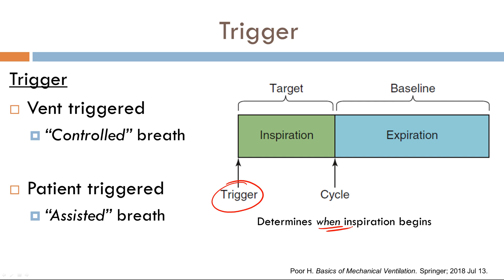So now let's get familiar with controlled breaths and assisted breaths. The difference between controlled breaths and assisted breaths is the trigger variable. If you have a controlled breath, or a ventilator-triggered breath, the trigger variable is time. For example, let's say you have a respiratory rate of 12 breaths per minute. If the patient is deeply sedated, 5 seconds will go by, and as a result, the vent will trigger a breath — a controlled breath, because time is your trigger variable.